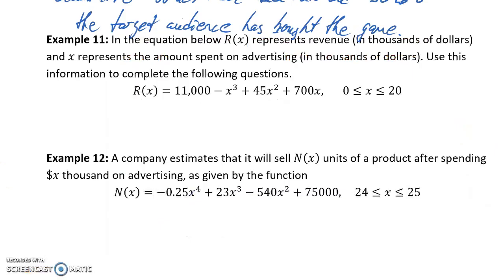However, in the example we're given, we're told that the equation below gives us revenue in thousands of dollars, and x is the amount spent on advertising in thousands of dollars. So that value of x equals 15 would tell us that our point of diminishing returns occurs after $15,000 has been spent on advertising, generating a revenue of $28,250,000.